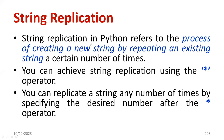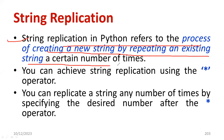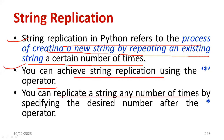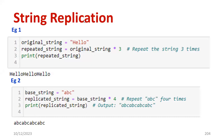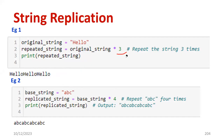String replication in Python refers to the process of creating a new string by repeating an existing string a required number of times. You can achieve string replication using the star operator, replicating the string as many times as needed based on requirement. In the interactive shell: the original string is 'hello', the repeated string equals original string multiplied by 3, and printing gives 'hello' three times. You can also repeat 'abc' four times using this operation. This is called string replication.